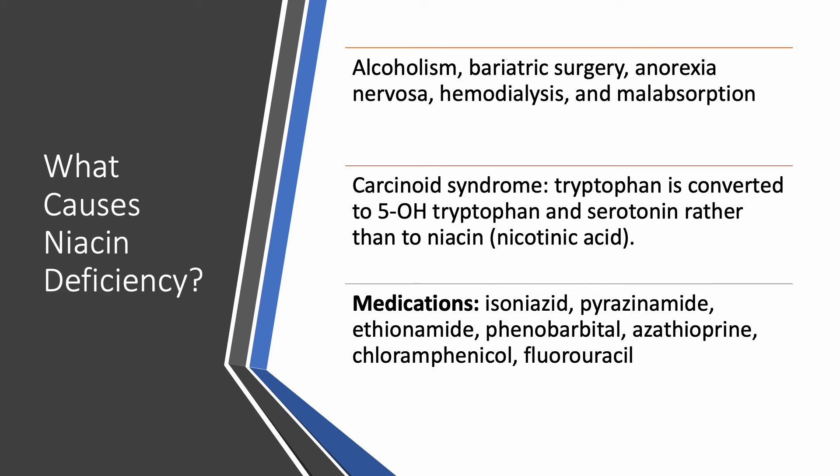Carcinoid syndrome — a neuroendocrine tumor in the intestine and lungs — causes tryptophan to be converted into 5-hydroxytryptophan and serotonin instead of niacin, so there won't be enough niacin. Certain medications also block the conversion of tryptophan to niacin: isoniazid, pyrazinamide, and ethionamide, which are used for tuberculosis; phenobarbital, an older medicine for seizures; azathioprine, used for immunological disorders; chloramphenicol, an antibiotic; and fluorouracil, a chemotherapy used for many cancers, especially colon cancer. Anyone on these medications should take niacin.